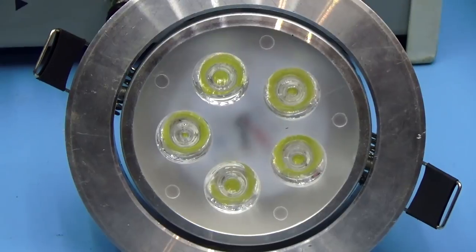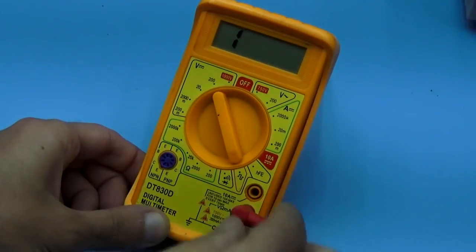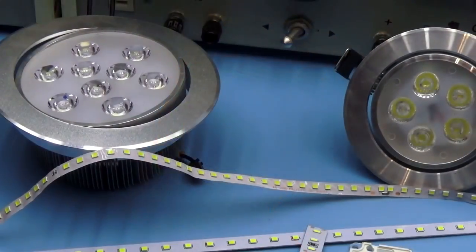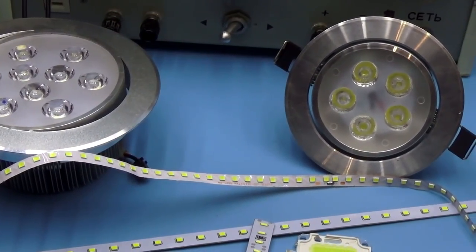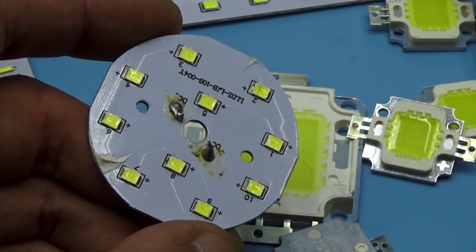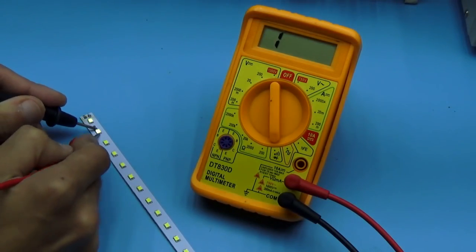They can be checked with a multimeter or with a power source and resistor to limit current. In modern LED lamps, LEDs are connected in series and parallel, and it takes a long time to check each LED separately.